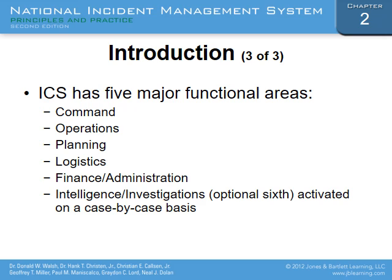The Incident Command System has five major functional areas: Command, Operations, Planning, Logistics, and Finance. A sixth area — Intelligence/Investigations, or a law enforcement branch — is no longer optional. The important way to think about this is an organizational chart, where people in charge have different levels below them. Those different levels have very specific jobs, and they all communicate together to get the job done.